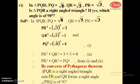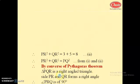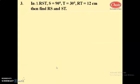By the converse of the Pythagorean theorem, the given triangle is a right angle triangle, and PR and QR form the right angle. So angle PQR equals 90 degrees.